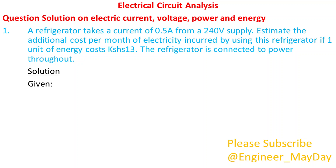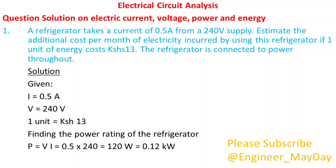Given: I equals 0.5 amperes, V equals 240 volts, one unit equals 13 shillings. Finding the power rating of the refrigerator: P equals 0.12 kilowatts.